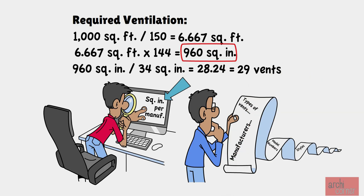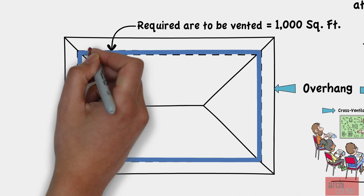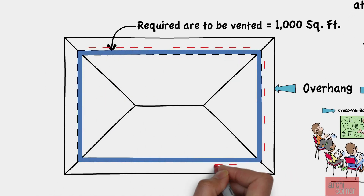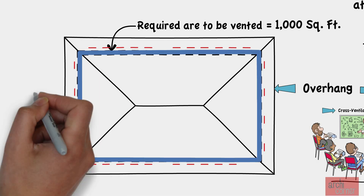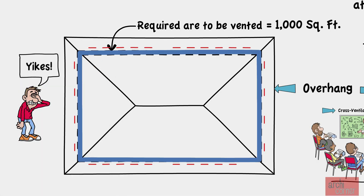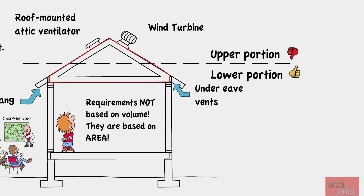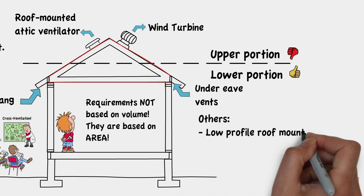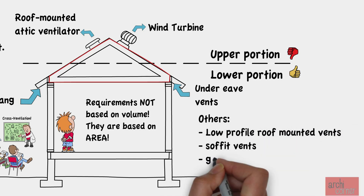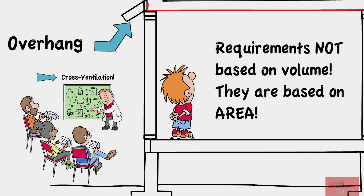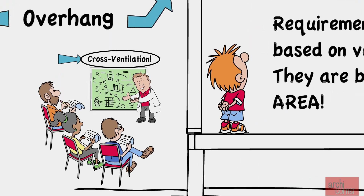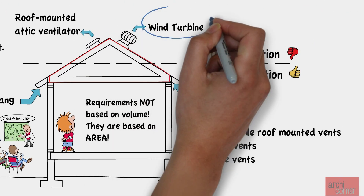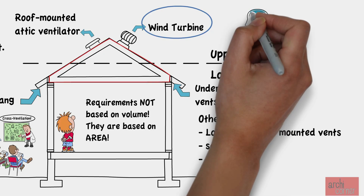We have to show the location of the vents on the roof plan. If we were to only use eave vents, we would need a lot of them. That is why other types of vents are also used in conjunction, such as roof-mounted attic ventilators, wind turbine vents, low-profile roof-mounted vents, soffit vents, and gable vents. For the purposes of this example, let's assume we will use wind turbines.